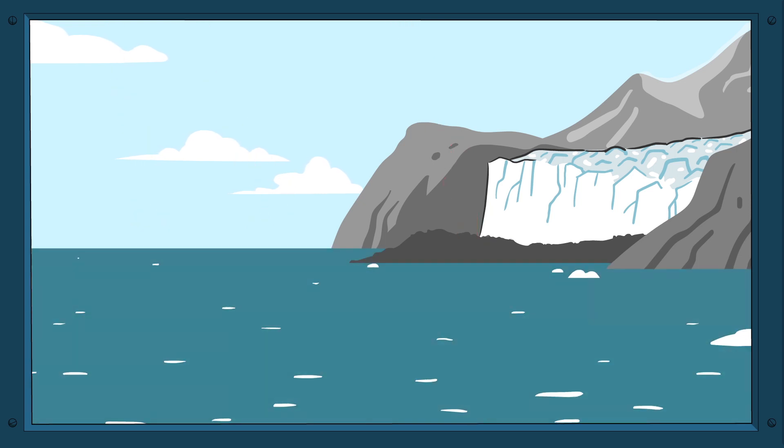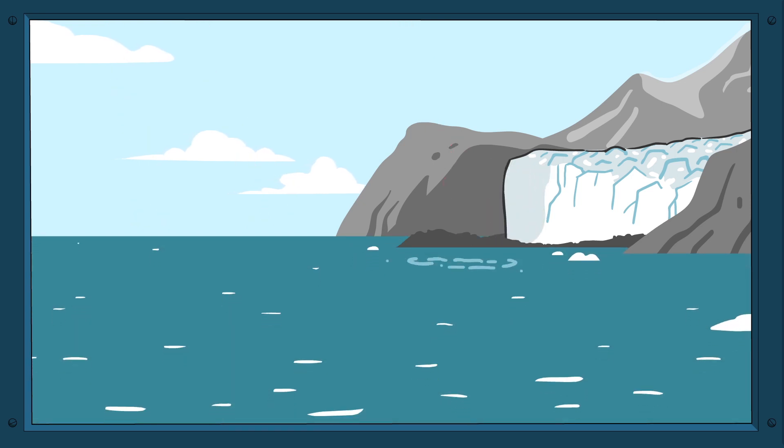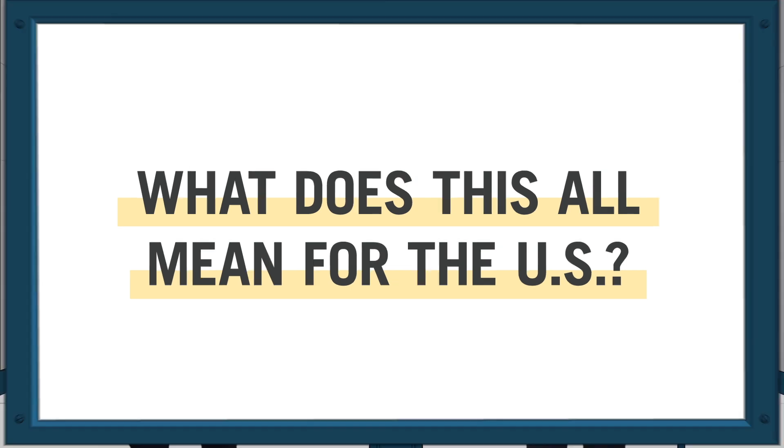Dry places get drier, wet places get wetter. Warm oceans expand and melting glaciers make sea levels rise even more.